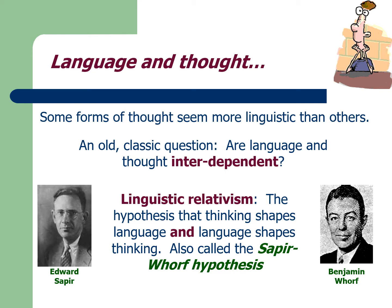Language and thought seem to be somewhat separate but also interdependent. The idea of linguistic relativism is that thought shapes language and language shapes thought. Experiments have shown that when people are asked to argue against their actual viewpoint, after constructing that argument they start to agree with it a little bit more. This is the idea that what I say influences how I think, and what I think influences what I say — this is called the Sapir-Whorf hypothesis.